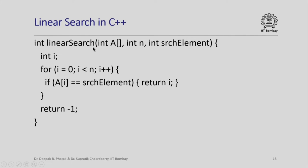Here is how the linear search function looks. It iterates through the array a from a[0] through a[n-1]. Whenever it finds an element equal to the search element it returns that index. If it exits the for loop without finding any match, it returns minus 1. So this is simple.